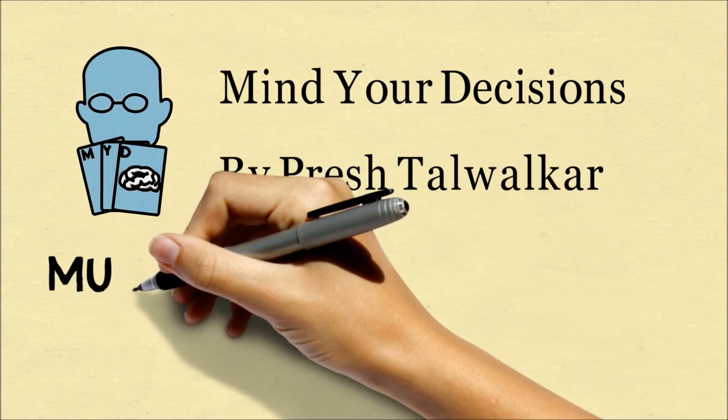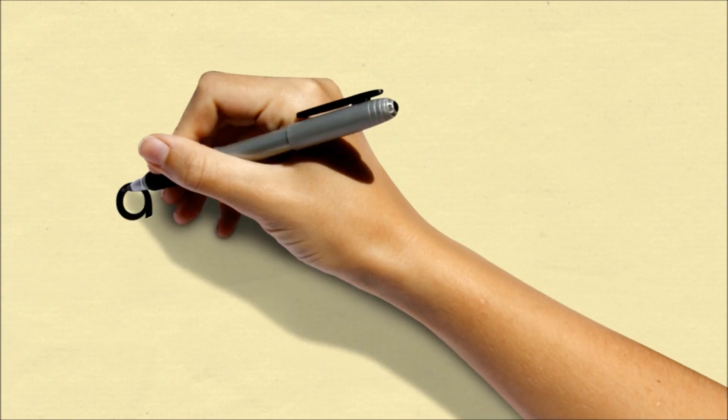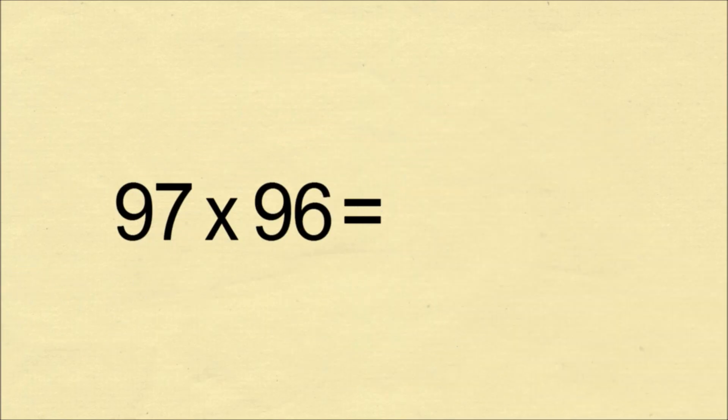Hi, this is Presh Talweker. Let's learn how to multiply numbers that are close to 100 in your head. Let's do 97 times 96.